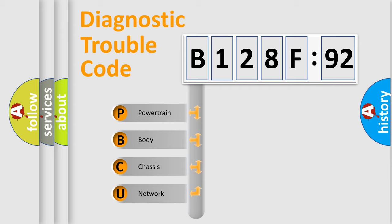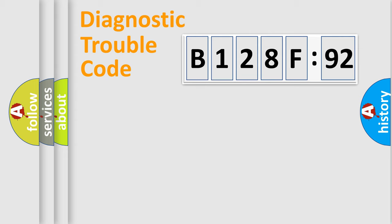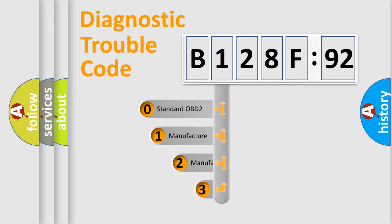We divide the electric system of automobile into four basic units: Powertrain, Body, Chassis, and Network. This distribution is defined in the first character code.